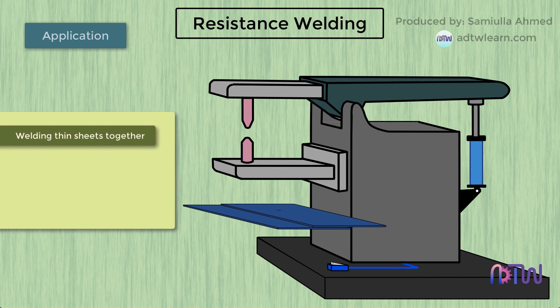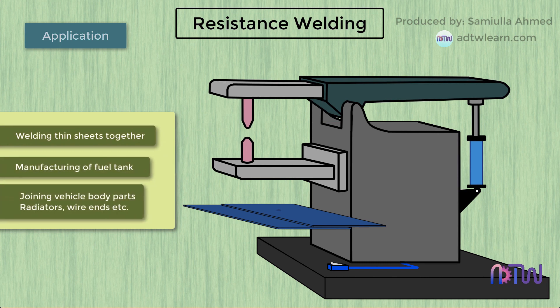Application of spot welding: Spot welding is used for welding thin sheets together in the manufacturing of fuel tanks, joining vehicle body parts, radiators, wire ends, etc.